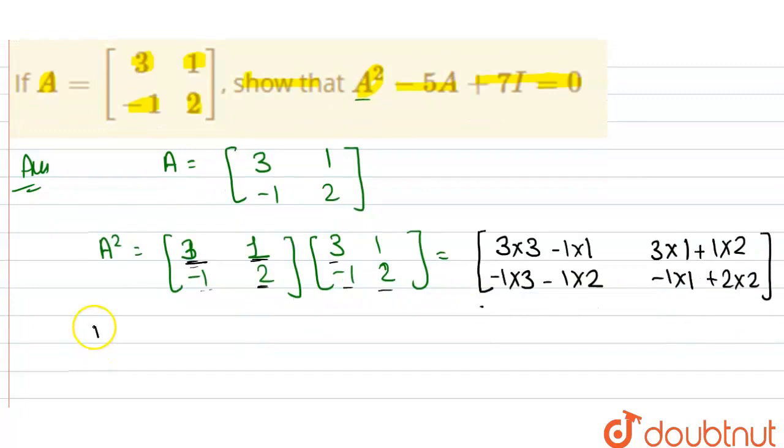Now, the A squared matrix value equals: 3 into 3 is 9, 9 minus 1 equals 8. Similarly, 3 into 1 is 3, 3 plus 2 equals 5. Minus 3 minus 2 equals minus 5, and 2 into 2 is 4, 4 minus 1 equals 3. This is the value of A squared matrix.